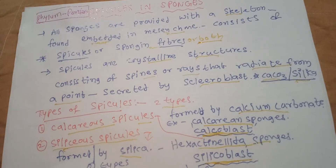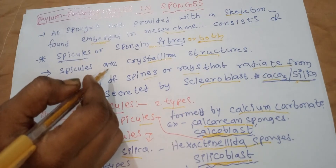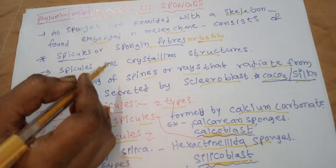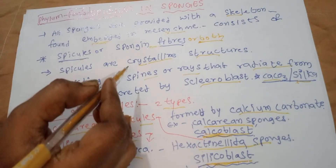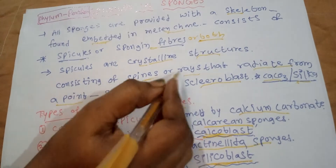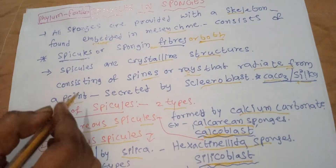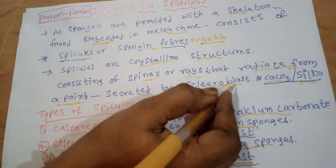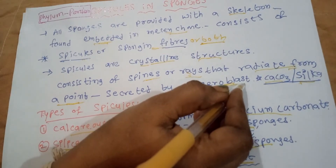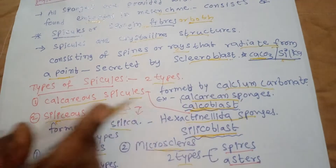These support and protect the sponge body and also serve in the classification of sponges. Spicules are crystalline structures consisting of spines or rays that radiate from a pointed centre. These are secreted by scleroblasts, which have an axis of organic material around which is deposited calcium carbonate and silica.